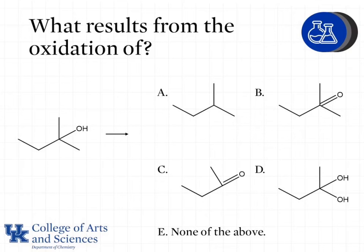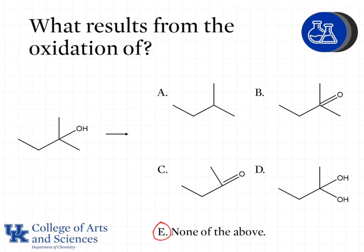What results from the oxidation of the molecule shown? In this case, we have a tertiary alcohol, which cannot be further oxidized. Therefore, the answer is E — none of the above. The hydroxyl carbon already has four bonds, so additional bonds to oxygen cannot be added.